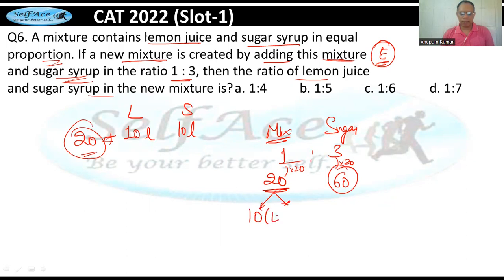Ab is 20 mein se already 10 lemon hai aur 10 sugar hai. Yeh 10 lemon hai, 10 sugar hai. Ismein humne 60 sugar aur mila diya. To ab kya hua? Lemon aur sugar yeh likhe to, lemon 10 bacha aur sugar 10 to yeh tha, 60 aur to 70 ho gaya. To what is the ratio? Agar dikkat na ho, ho matlab usse zero se handle karna asaan rehta hai.